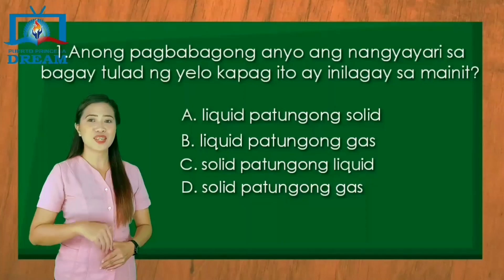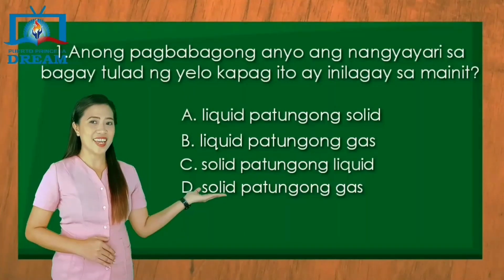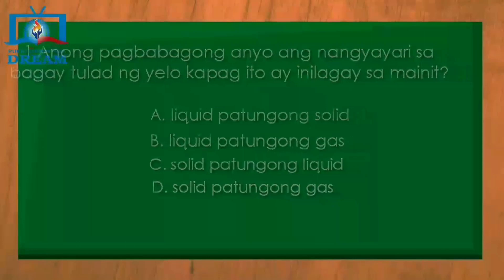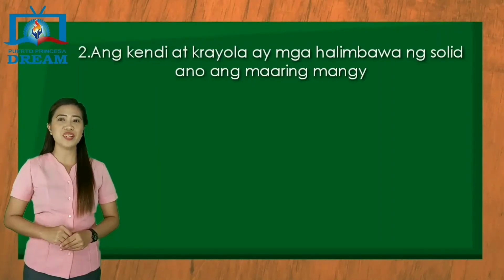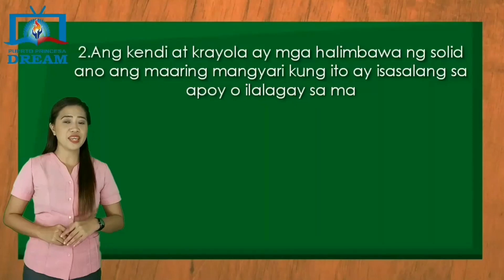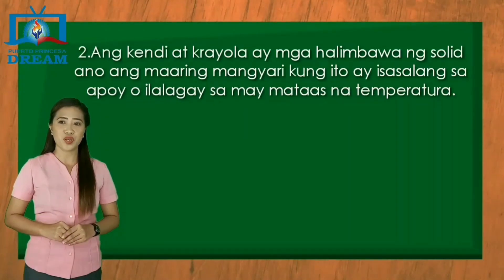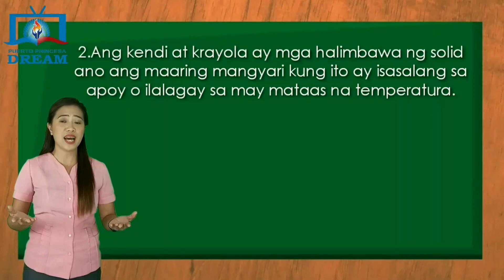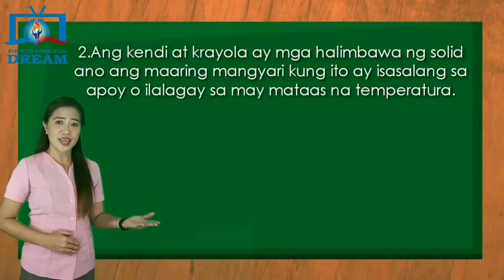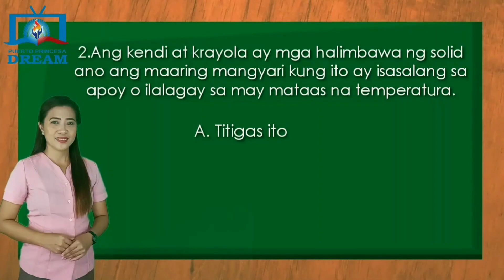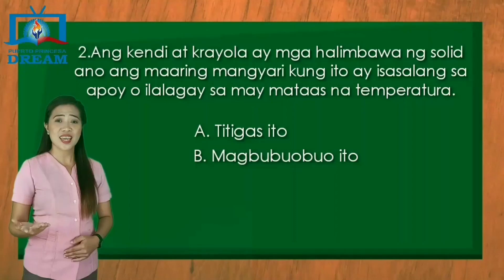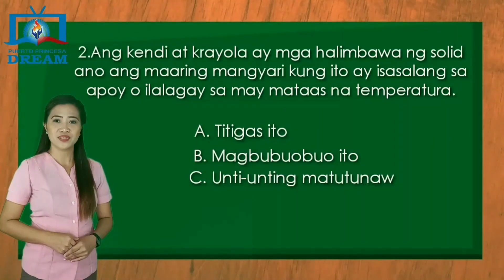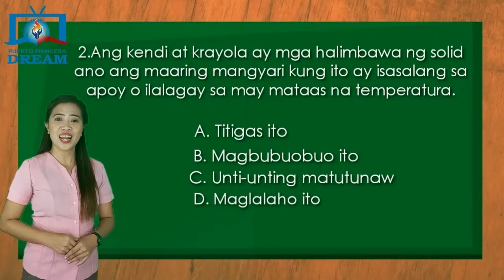Ang tamang sagot ay Titik C. Ikalawang bilang: ang candy at crayola ay mga halimbawa ng solid. Ano ang maaaring mangyari kung ito ay isasalang sa apoy o ilalagay sa may mataas na temperatura? A. Titigas ito. B. Magbubuo-buo ito. C. Unti-unting matutunaw. D. Maglalaho ito.